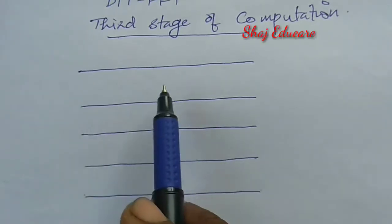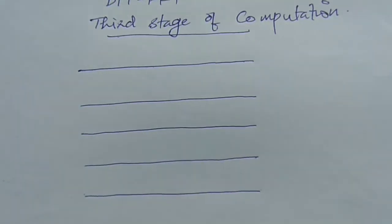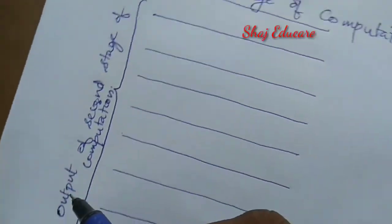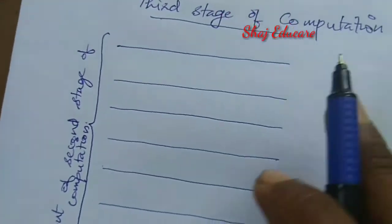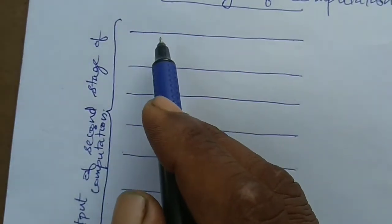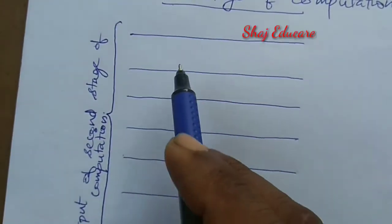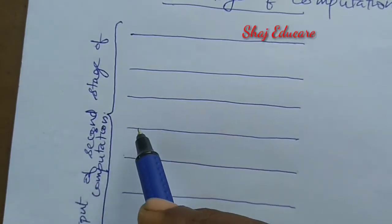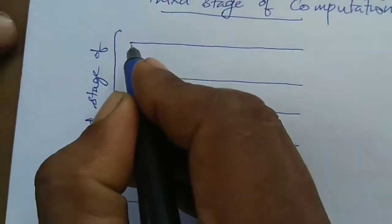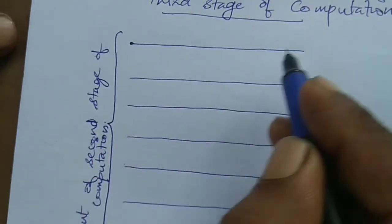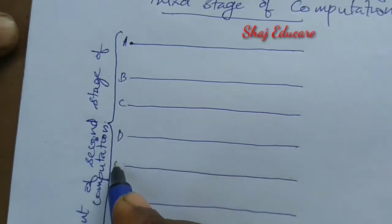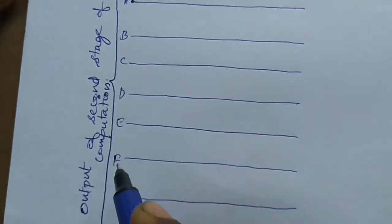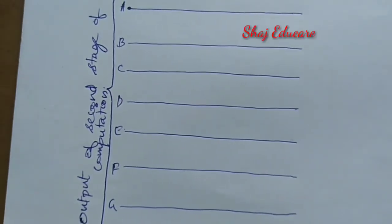These are the inputs to the third stage of computation, taken from the output of the second stage of computation. Now, in order to explain the output equation, let us write the inputs as A, B, C, D, E, F, G, and H. Now let us start the butterfly diagram.